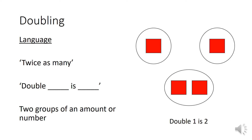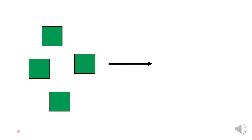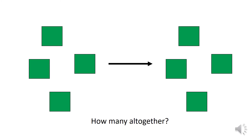If I wanted to show two groups of a number I could write my numbers at the top. Let's quickly recap from the last video — what amount do I have on my screen? Four, well done. So if I'm doubling, I need to make another group so that I've got two groups of my four. Now I've got my two groups of four — how many do I have altogether? Eight. So double four is eight. Well done.